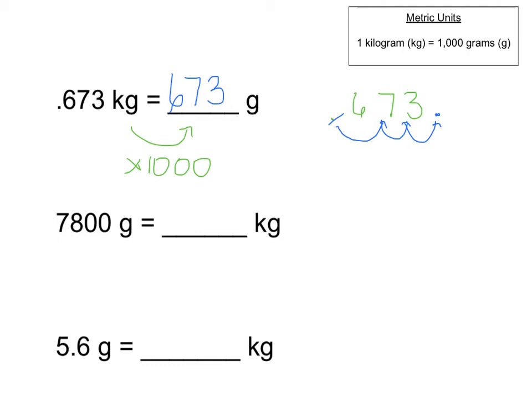The next problem is 7,800 grams equals some number of kilograms. Well, in this case, going from grams to kilograms, I'm going from a smaller unit to a larger unit. So I'm actually going to need to divide this time by 1,000. It works in a very similar way. So I'm going to write down 7,800. I know my decimal point is over here on the right. So this time, to divide by 1,000, I'm going to go to the left. So I'm going to move my decimal place, divide it by 10, divide by another 10, and divide by another 10. Dividing by 10 three times is the same thing as dividing by 1,000. So I have my decimal place, and now I can write it as 7 and 8 tenths kilograms.